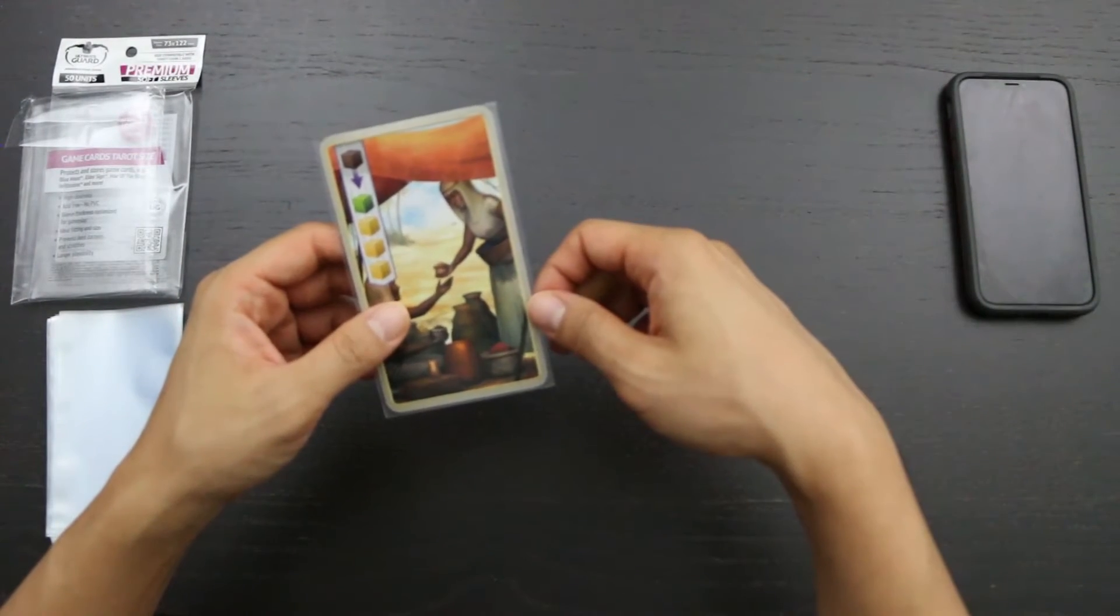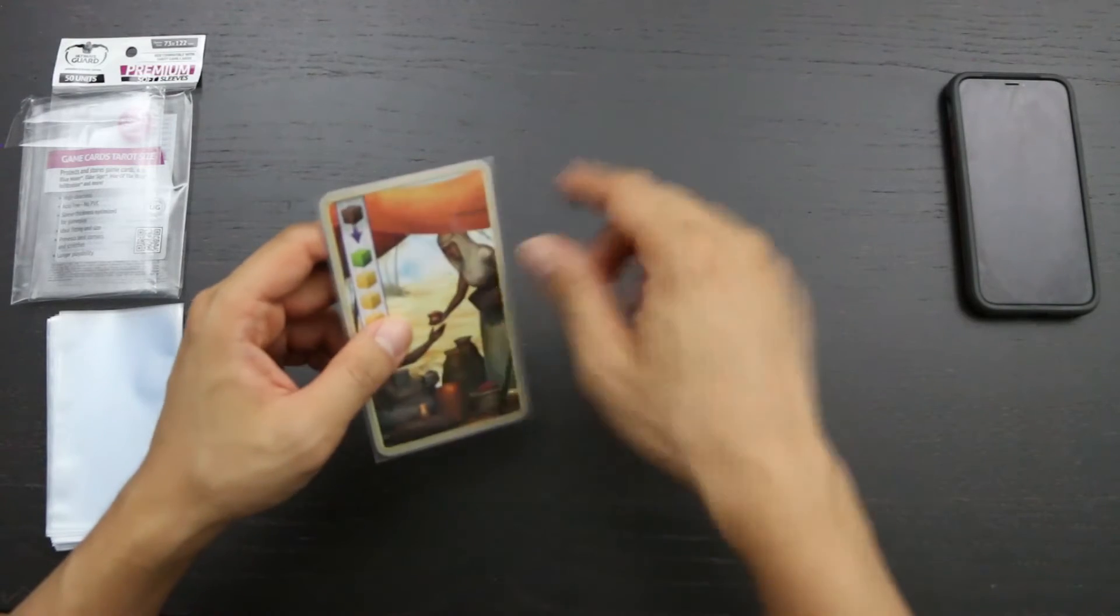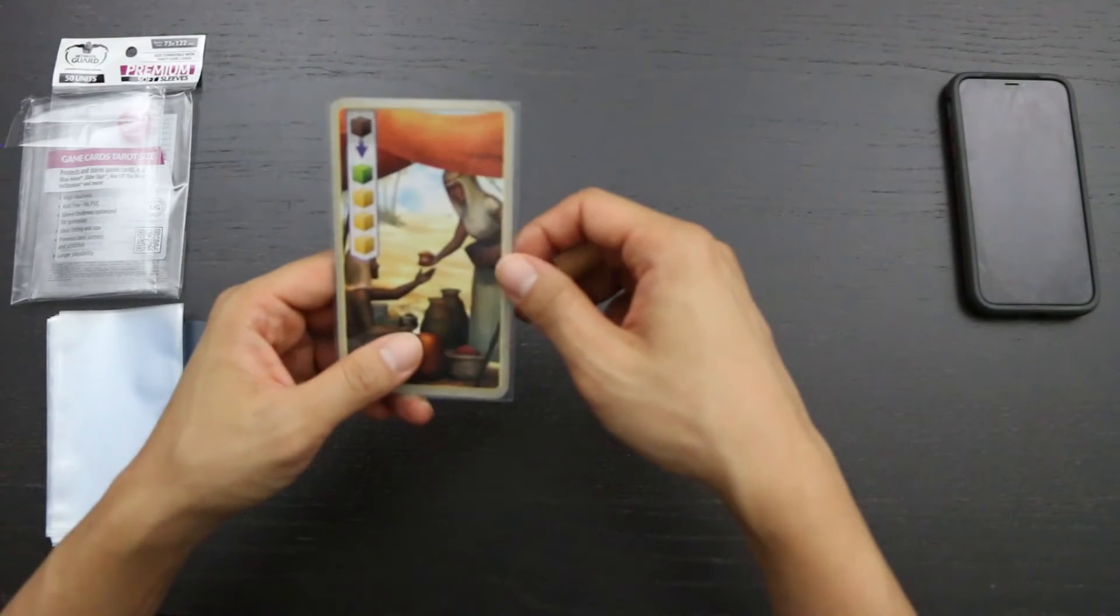I think with a more typically tarot-sized card, you're going to see just a tiny bit of plastic at the top. Not a lot though, and so it's still going to be a bit of a tight fit.